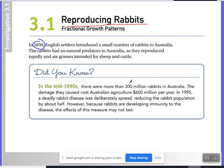In 1995, a deadly rabbit disease was deliberately spread, reducing the rabbit population by about half. However, because the rabbits are developing immunity to the disease, the effects of this measure might not last.